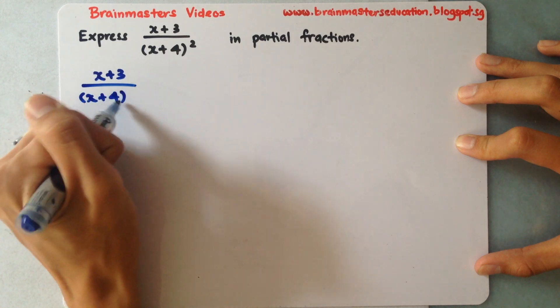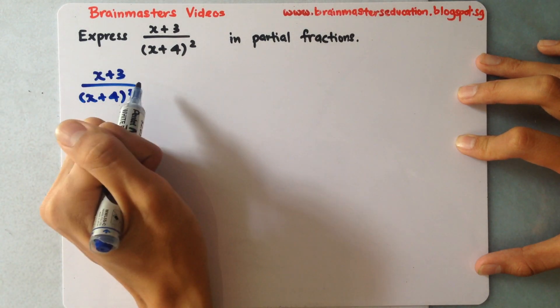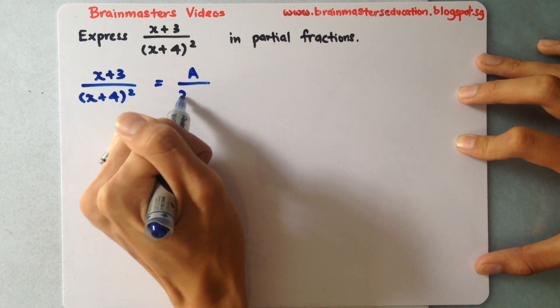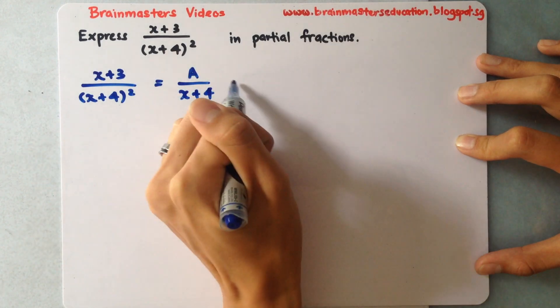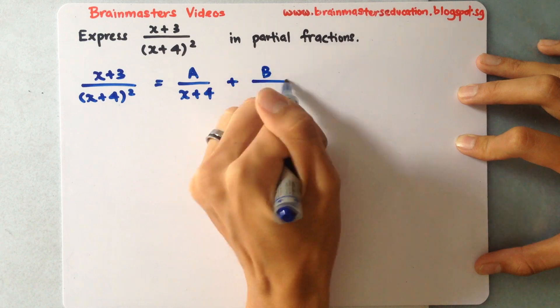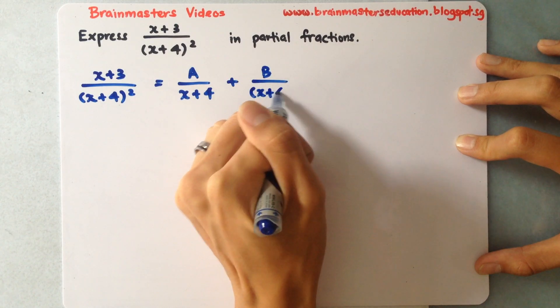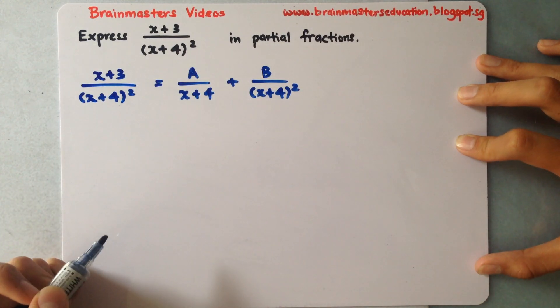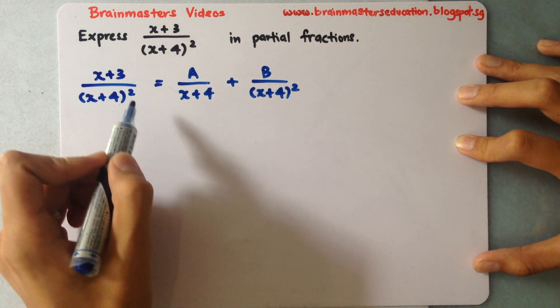So over here I'll have A over (x+4) plus B over (x+4) square. The power you see actually gradually increases.